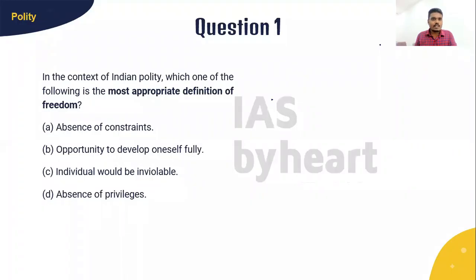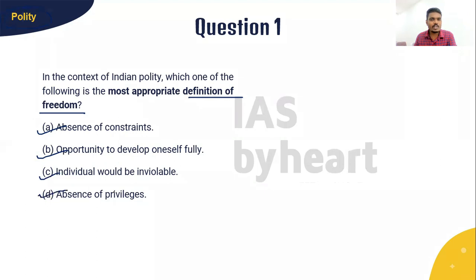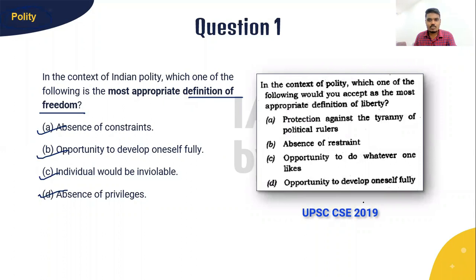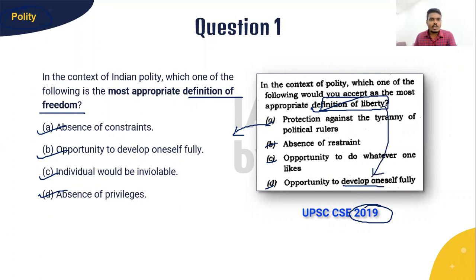The first question: In the context of Indian polity, which one of the following is the most appropriate definition of freedom? This question is about the definition of freedom, taken from the polity topic. The four options are: A) Absence of constraint, B) An opportunity to develop oneself fully, C) Individuals' rights would be inviolable, D) The absence of privileges. This question has been inspired from a 2019 question paper where UPSC asked the most appropriate definition of liberty. I will give you 10 seconds to answer this question before proceeding to the explanation.